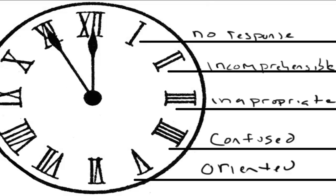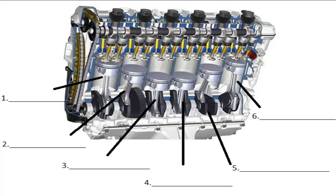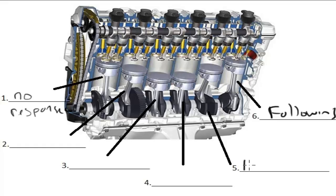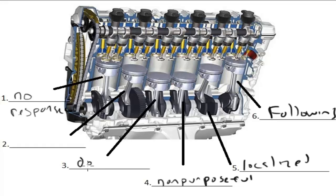After we assess the verbal component, we would assess the motor component. We remember that there are six possible points by thinking of a six-cylinder motor. You would get six points for following commands, and one point for no response at all. You would get five points for a localized or purposeful movement, such as withdrawing from or pushing away a painful stimulus. Four points for a non-purposeful movement. Three points for a decorticate response. And two points for a decerebrate response.